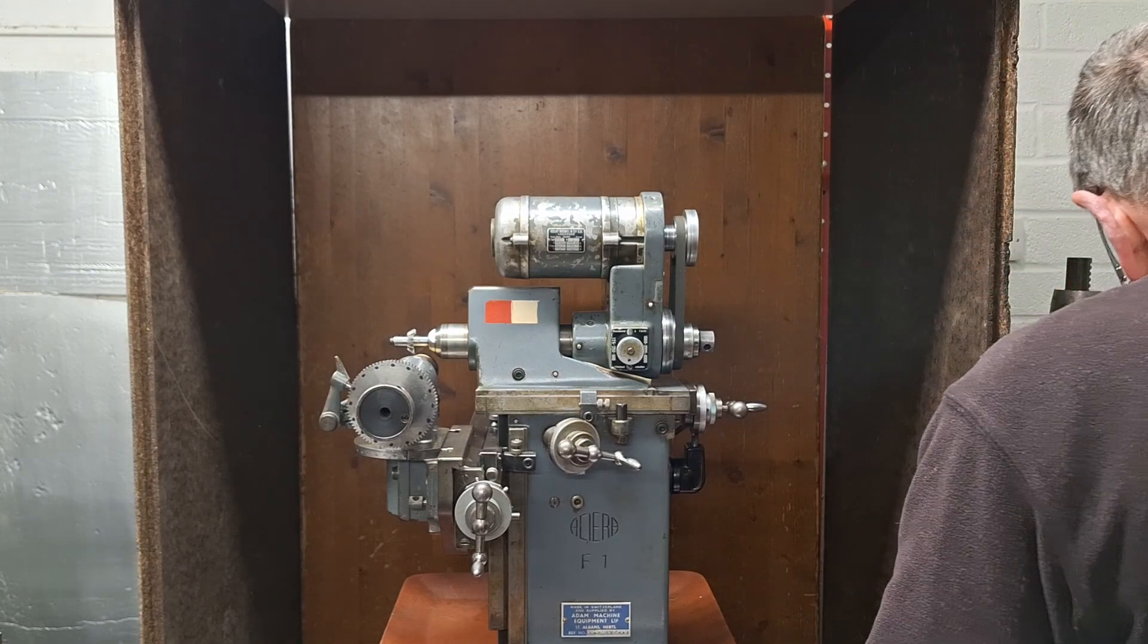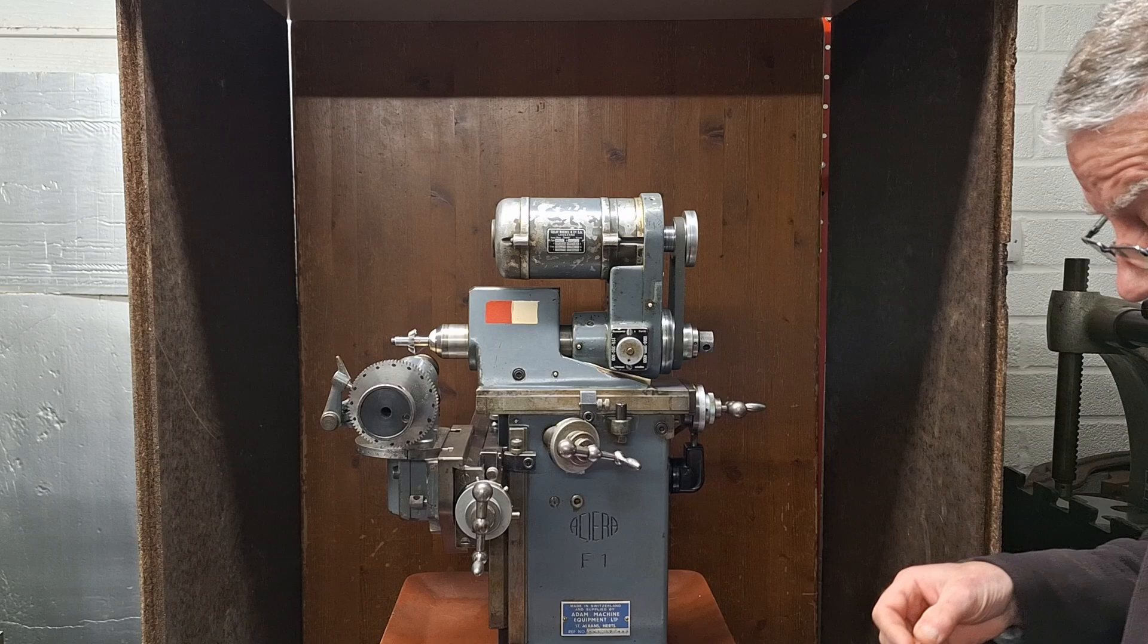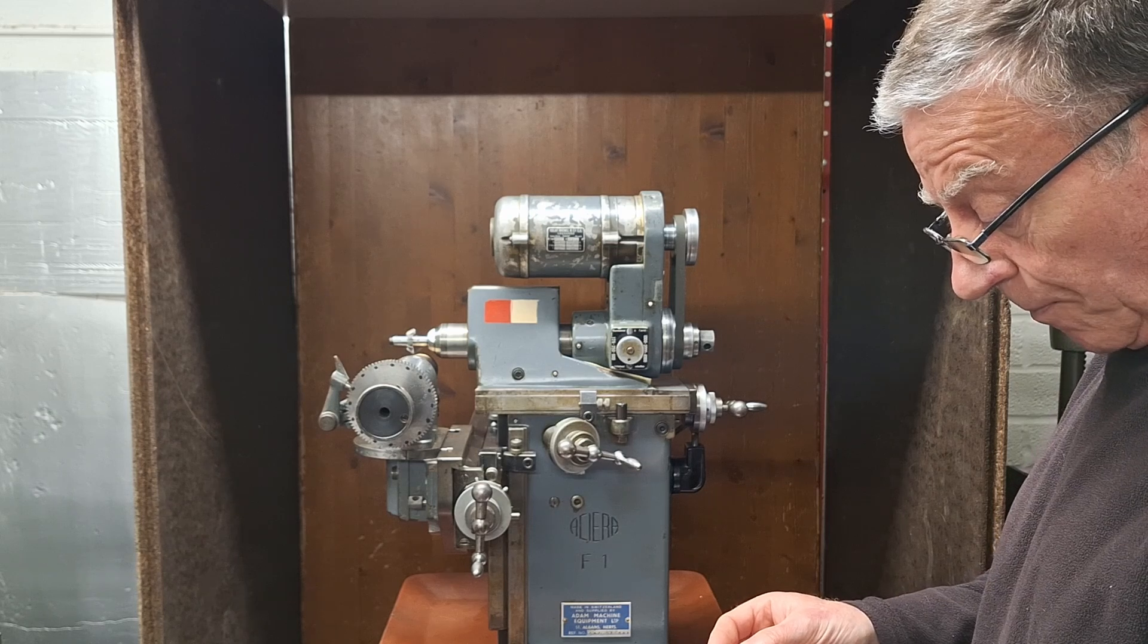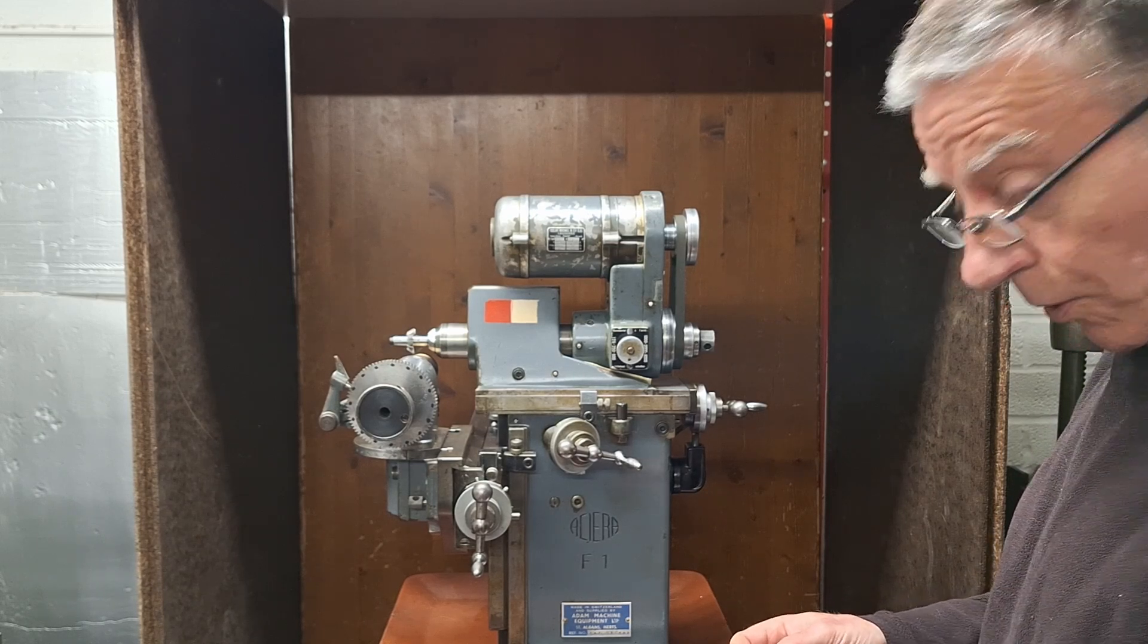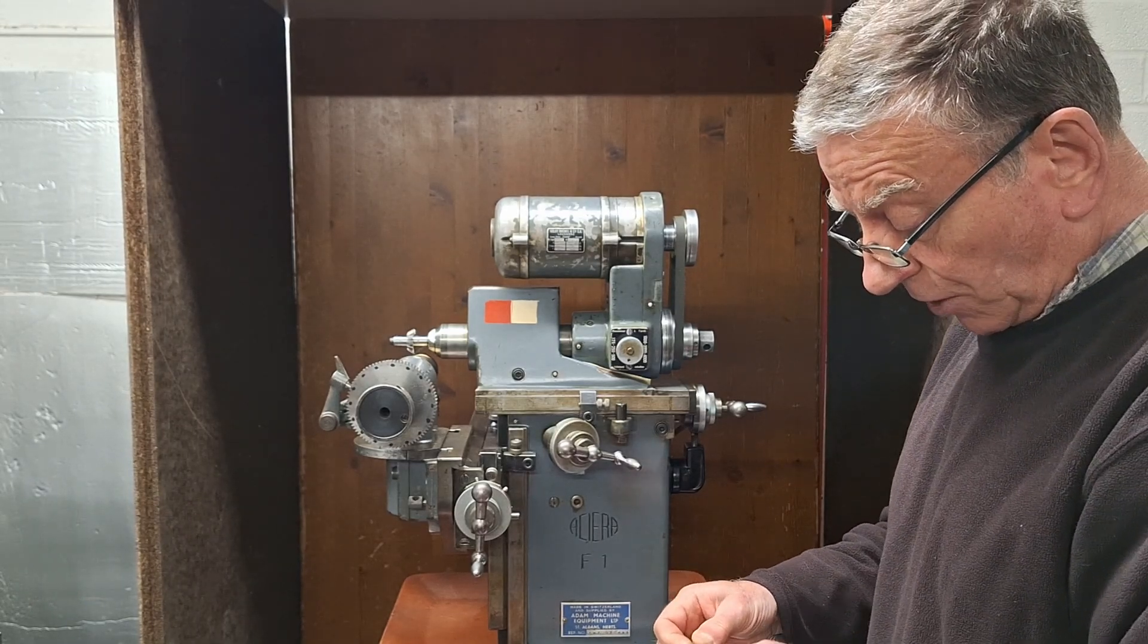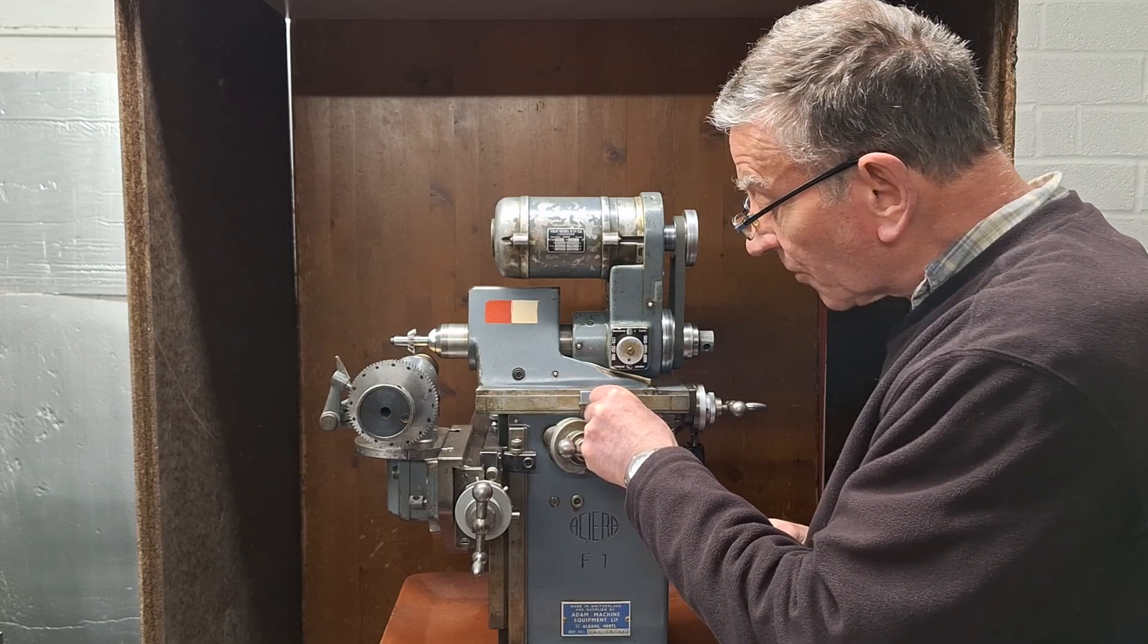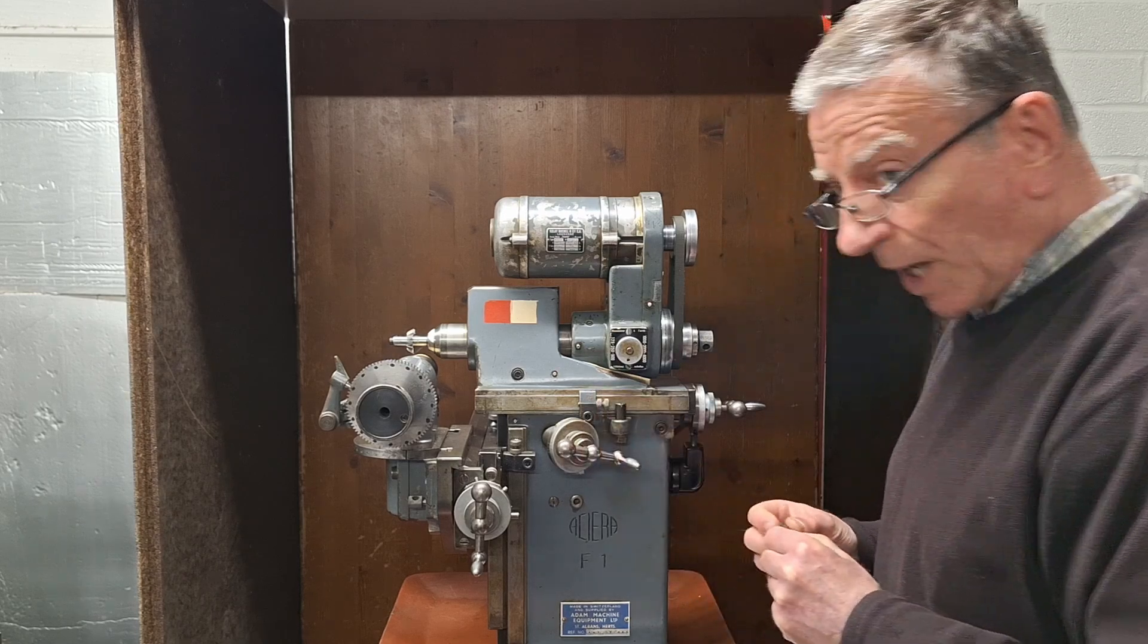Quick confidence check. Again, gauge blocks which is 0.17 and 0.105, so 0.275, not allowing for the half of a thousandth but it is only a confidence check. So just ring those together. Check against my stop, and that's a good sliding fit. So I'm happy with that. I know I'm in the right place.